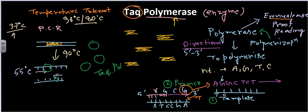The Taq polymerase binds and carries out the polymerization process at 72°C. For carrying out this process at high temperatures, we require this temperature-tolerant polymerase. If you bring a normal polymerase it will fail to do this job, so that's the very important advantage of Taq polymerase in PCR.